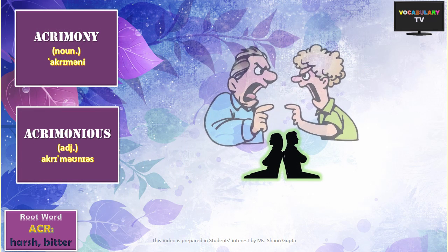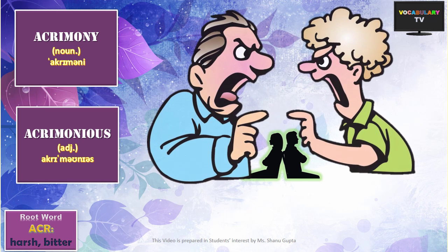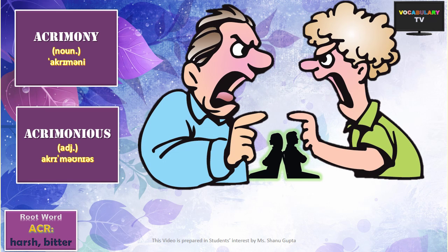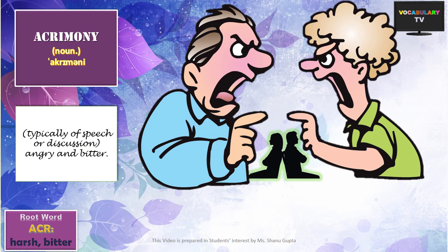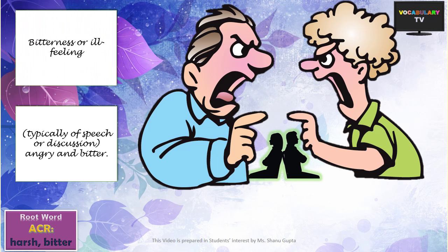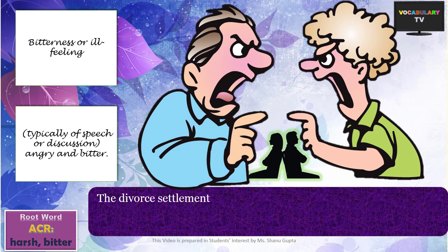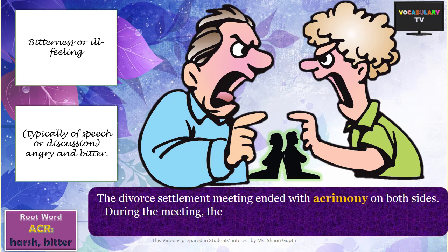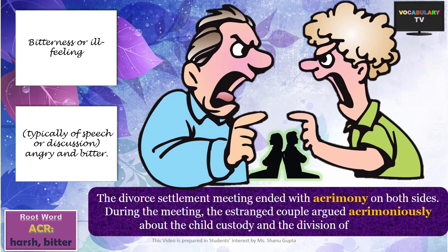While bitterness of taste is described by acerb, bitterness of feelings is described by the adjective ACRIMONIOUS. Acrimonious means full of spite or ill feeling — bitter and nasty — and is generally used to describe something like a speech or an argument. The related noun is ACRIMONY. For example: The divorce settlement meeting ended with acrimony on both sides; during the meeting, the estranged couple argued acrimoniously about child custody and the division of property.